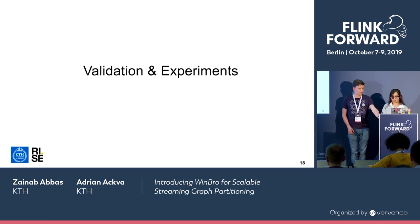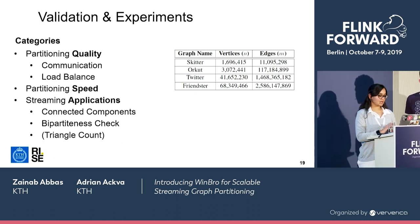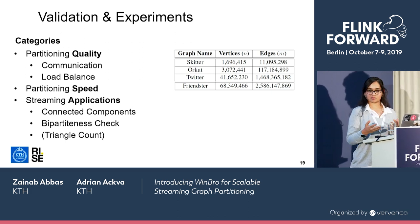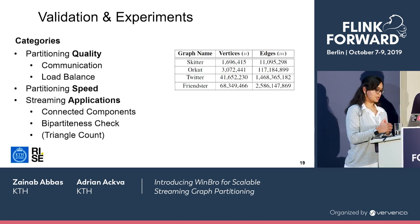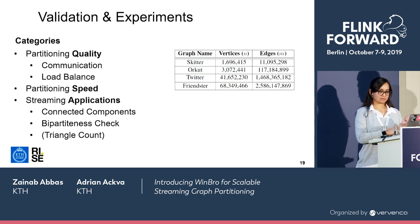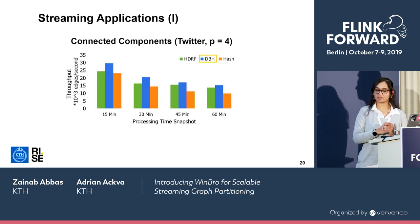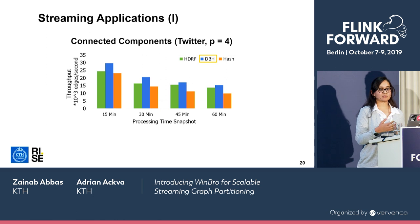In our experiments, we measured partitioning quality in terms of communication cost and load balance, then partitioning speed, and finally how well applications perform using these custom partitioning techniques. The applications we ran were connected components, bipartite check, and triangle count. The datasets include social media graphs: Skeeter and Orkut are small, and the big ones are Twitter and Friendster containing some billion edges. Due to time constraints I will only present the application results, but anyone interested can discuss the partitioning quality results with us.